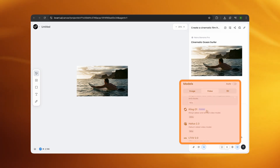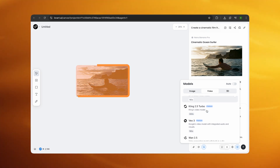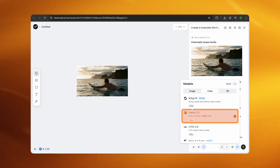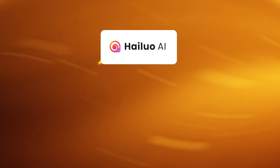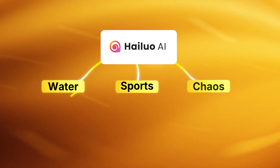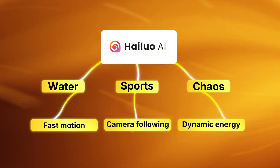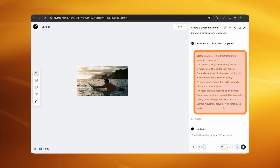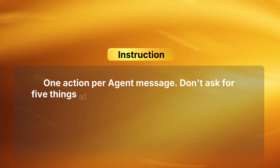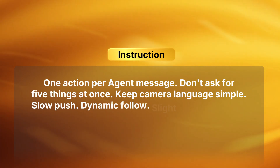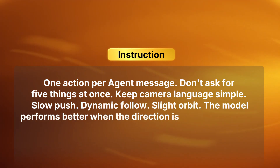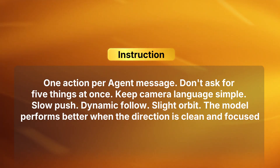Now you move to video generation, and this is where model matching matters — different models handle different motion types better. For the surf video I selected the image as an ingredient and then chose Hylo 2.3 as the video model. Hylo 2.3 is the model I use for water sports and chaos. It handles fast motion, camera following, and dynamic energy extremely well and is very good at creating human realistic scenes. I wrote a short instruction about the camera moving forward from behind the surfer with controlled ocean movement, then clicked create — scene one complete. The instruction logic: one action per agent message. Don't ask for five things at once. Keep camera language simple — slow push, dynamic follow, slight orbit. The model performs better when the direction is clean and focused.